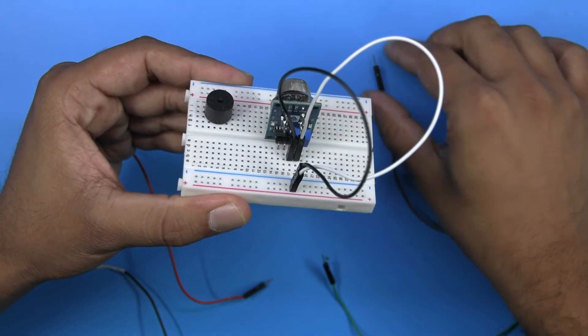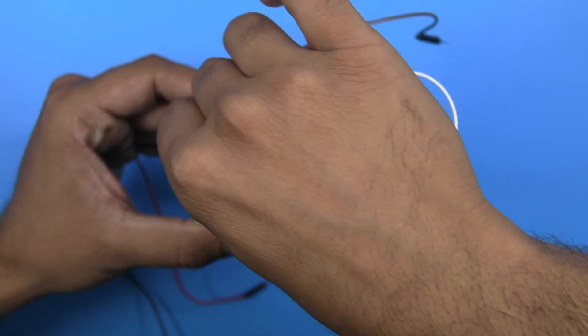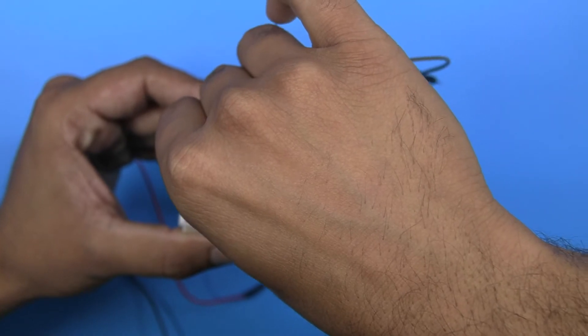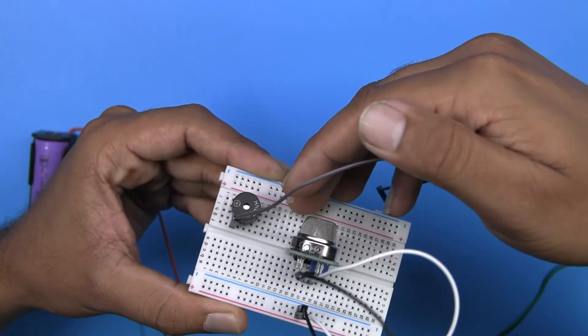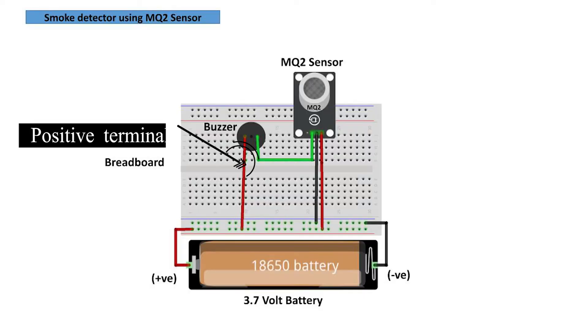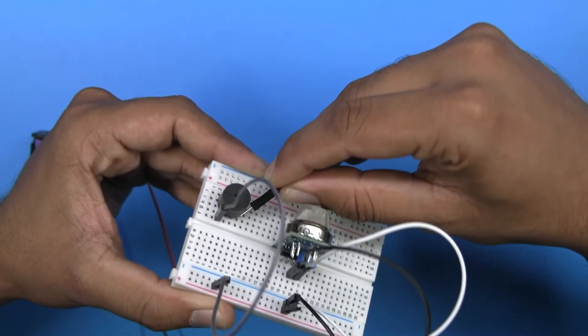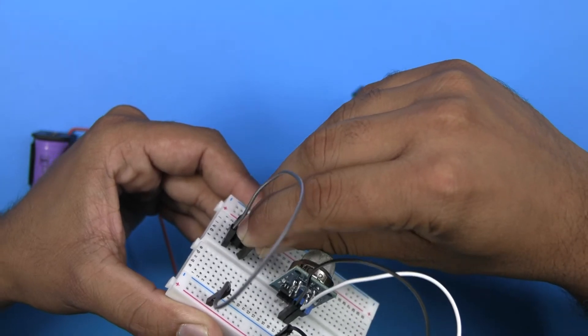Connect the supply wire which is red on the positive terminal of the buzzer, and other side on the power lines. Connect digital output to the negative terminal of buzzer via breadboard.